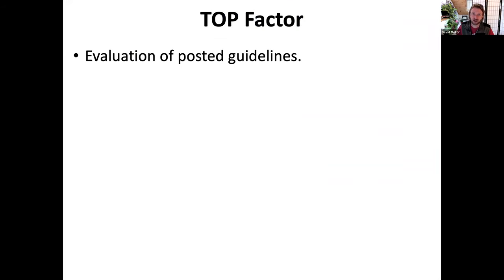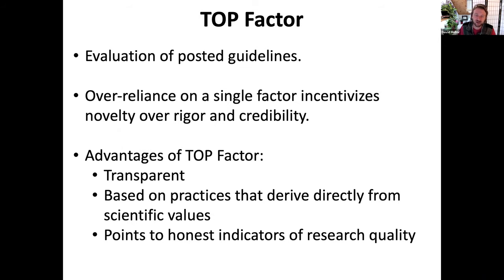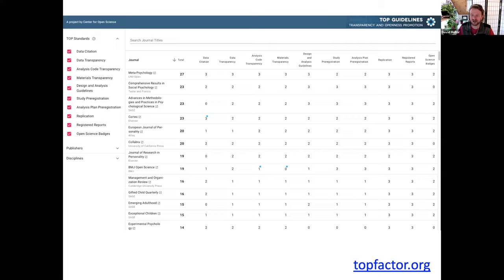The TOP guidelines provide recommendations for how to proceed. TOP factor is an evaluation of those posted author guidelines. TOP factor was created because we know that there is an over-reliance on a single factor that measures novelty and citation rates, but that comes at the expense of rigor and credibility. TOP factor is a transparent evaluation of author guidelines — data for each evaluation are publicly posted, it's based on practices that derive directly from scientific values, and it points to an honest indicator of research quality: the degree to which the work was transparently conducted and posted. TOP factor evaluations are shared on a tabular interface at topfactor.org.